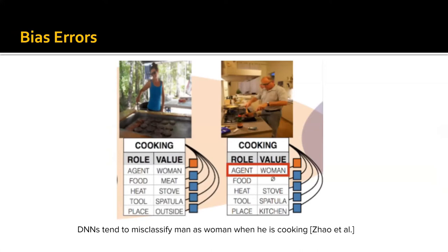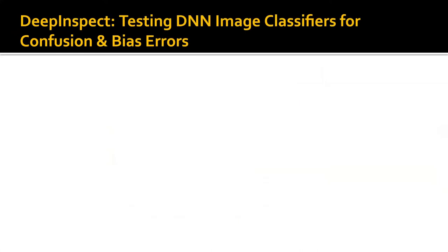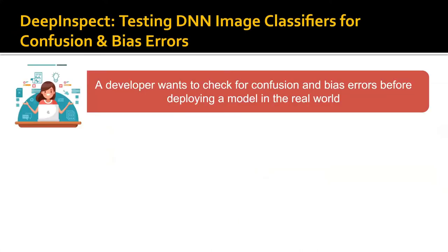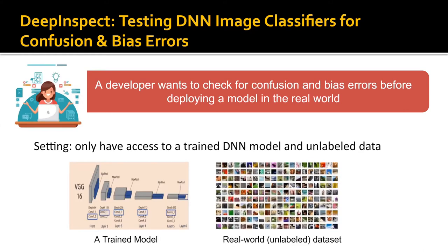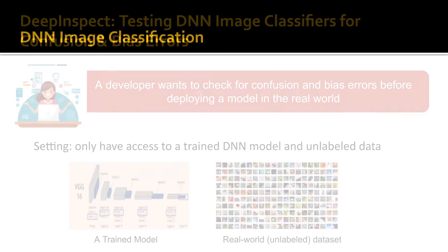So as a developer, we want to identify these errors before deploying a model in real world to avoid undesirable consequences. In this work, we develop a detector called DeepInspect that can automatically identify two types of errors: confusion errors and bias errors, when given a trained DNN model and some unlabeled data. In particular, we focus on DNN image classification.